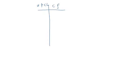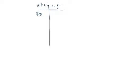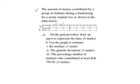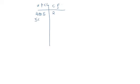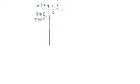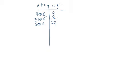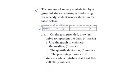The first upper class boundary is 400.5 and the cumulative frequency is 2. The second one is 500.5 and the cumulative frequency is 2 plus 10, which is 12. The third one is 600.5 and the cumulative frequency is 12 plus 12, which is 24. The next upper class limit is 700.5 and the cumulative frequency is 24 plus 14, which is 38.